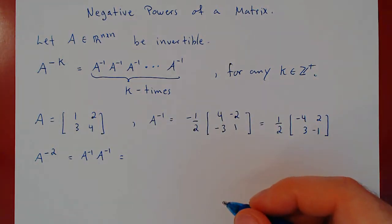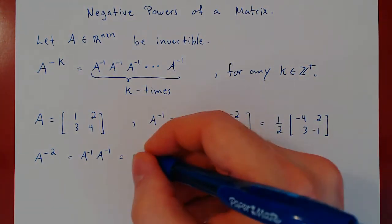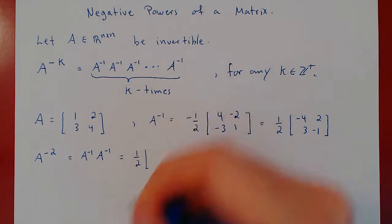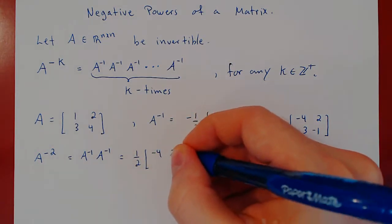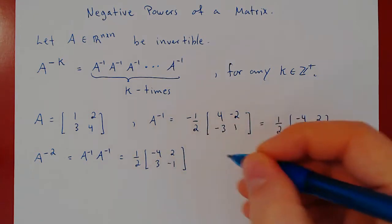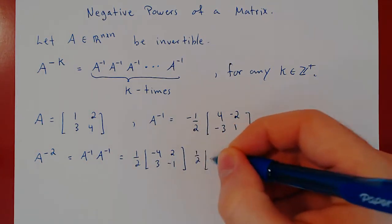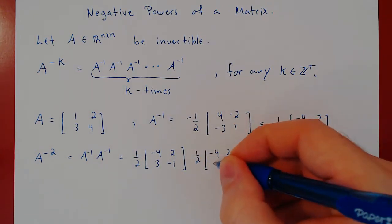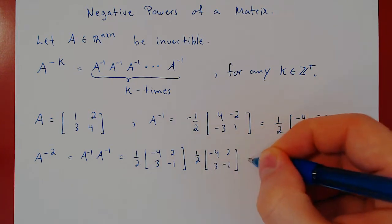Well, let's perform the multiplication. A inverse times itself, so 1 half, negative 4, 2, 3, negative 1, times 1 half, negative 4, 2, 3, negative 1.